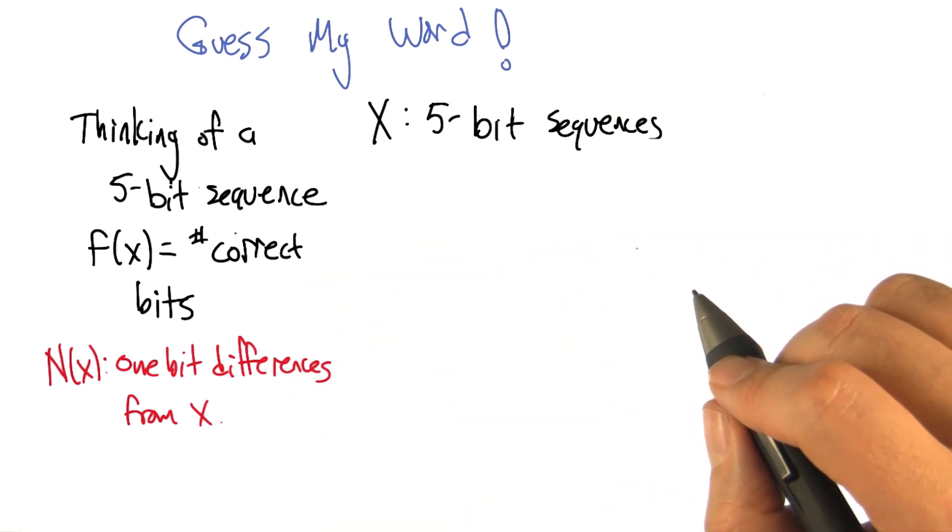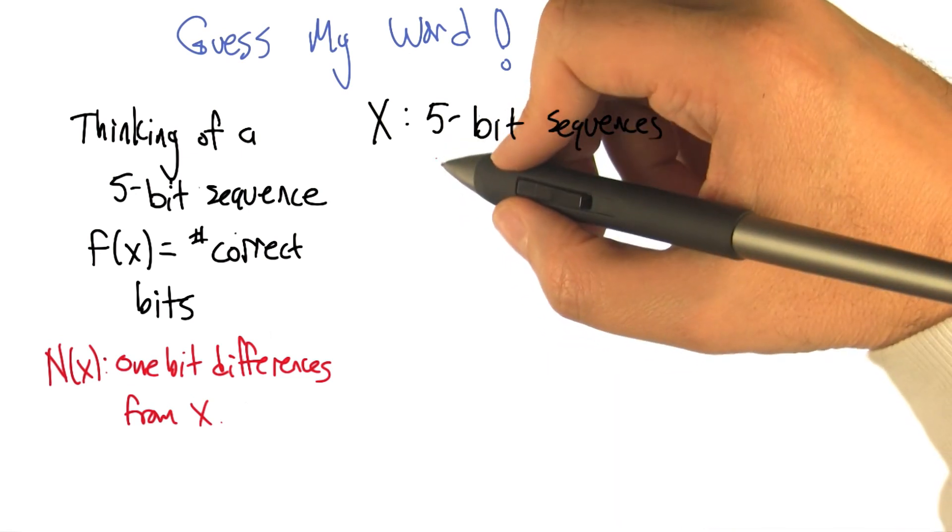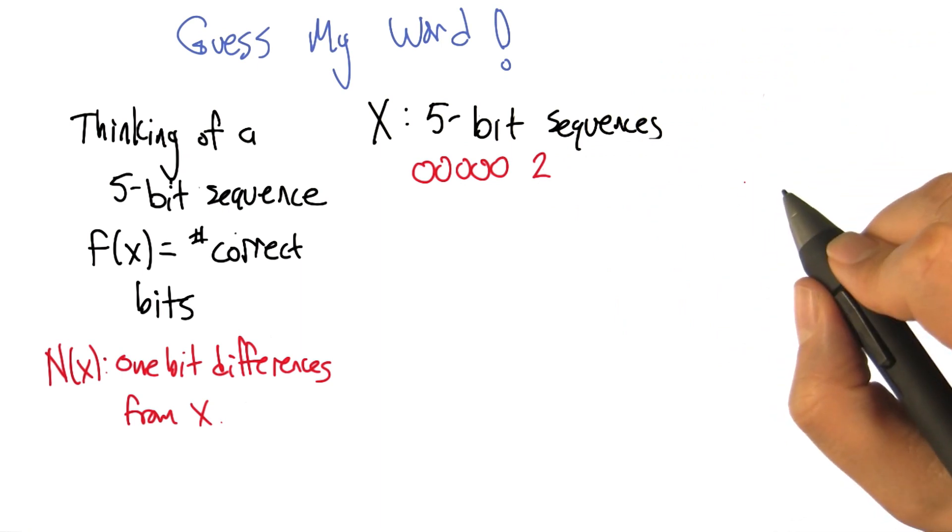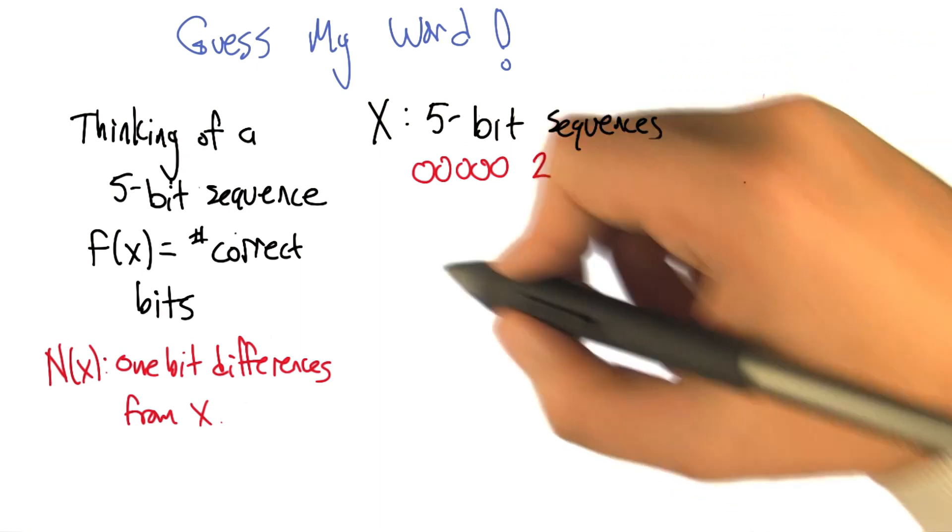All right, so we have to start somewhere, so let's just pretend for the sake of argument we started at all five zeros. And I'm going to give you a score of two for that. Okay. And so now I have to do all possible neighbors. And there are five of them. So there is one followed by four zeros.